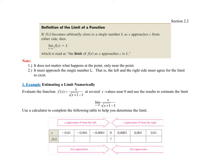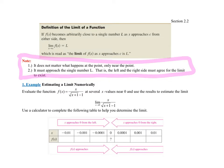I wanted to note a couple of things here — very important for you to see these notes. This is not written in this textbook; this is something I wrote for you. The first thing is: it does not matter what happens at that point, only near the point. In the first example we did, you could have just plugged in the number — that's what happened at that point. In the second example, you could not plug in the number, it was undefined — it was what happened near the point. So it doesn't matter what happens at that point; it's what happens near the point.